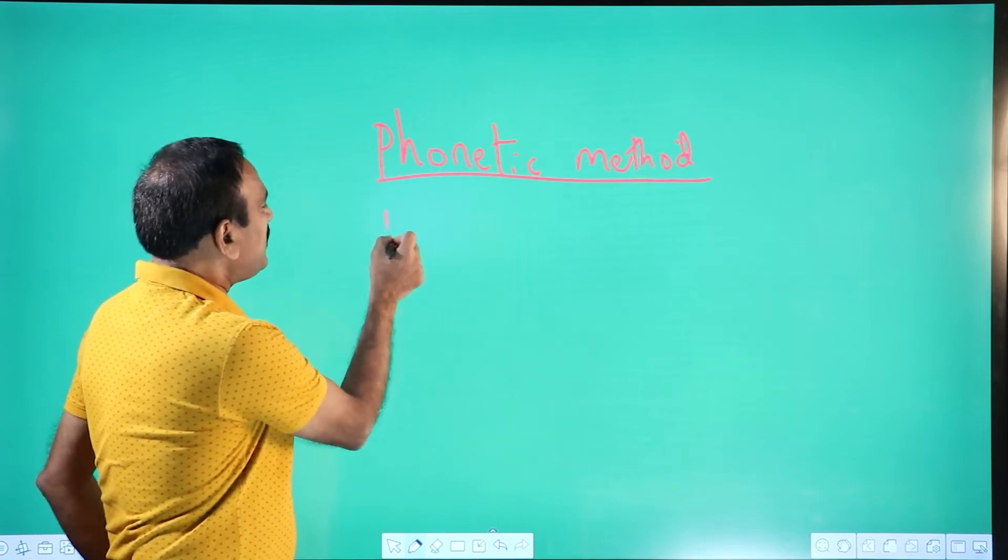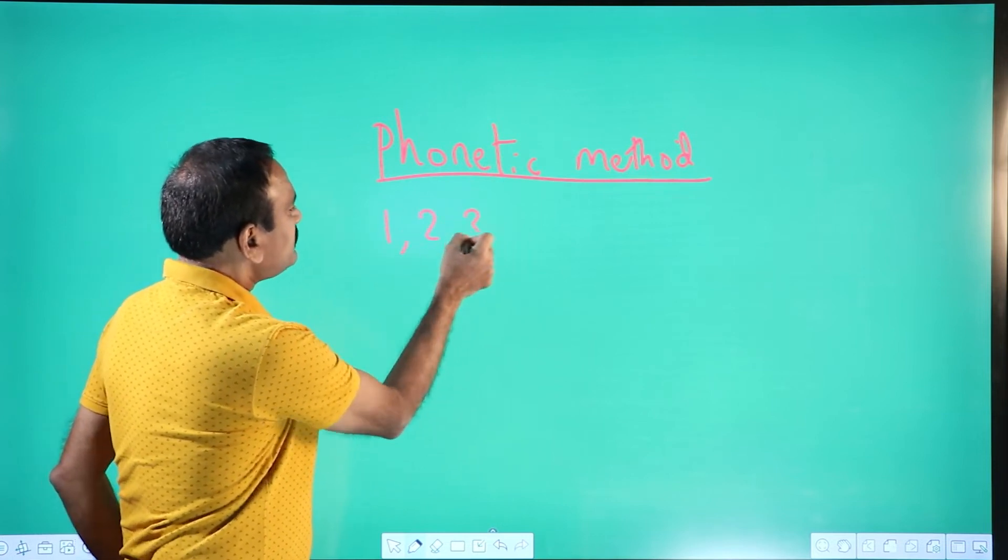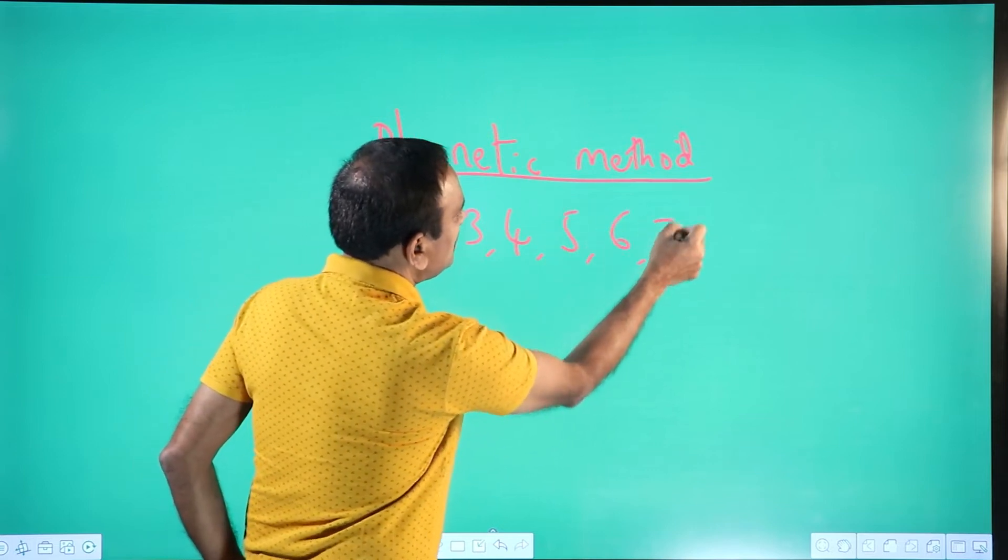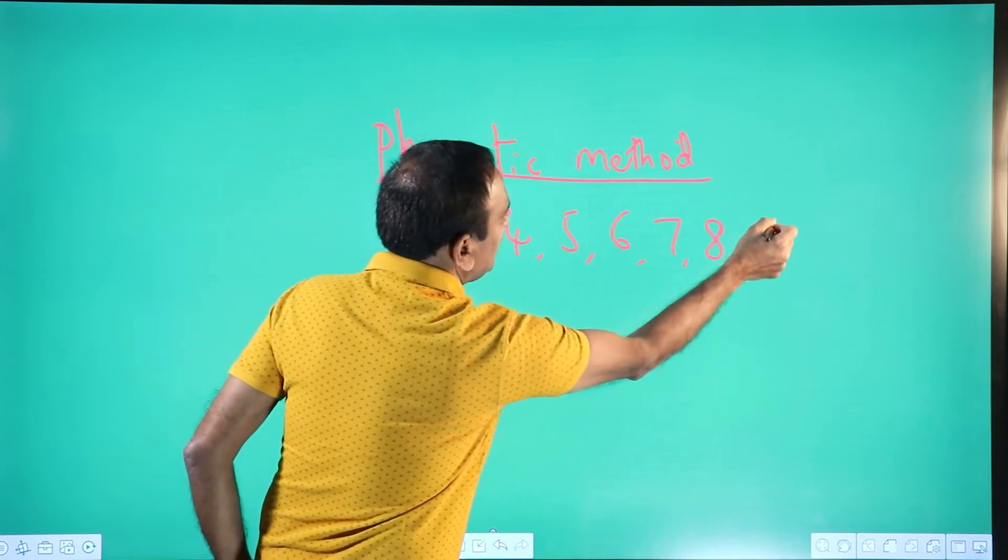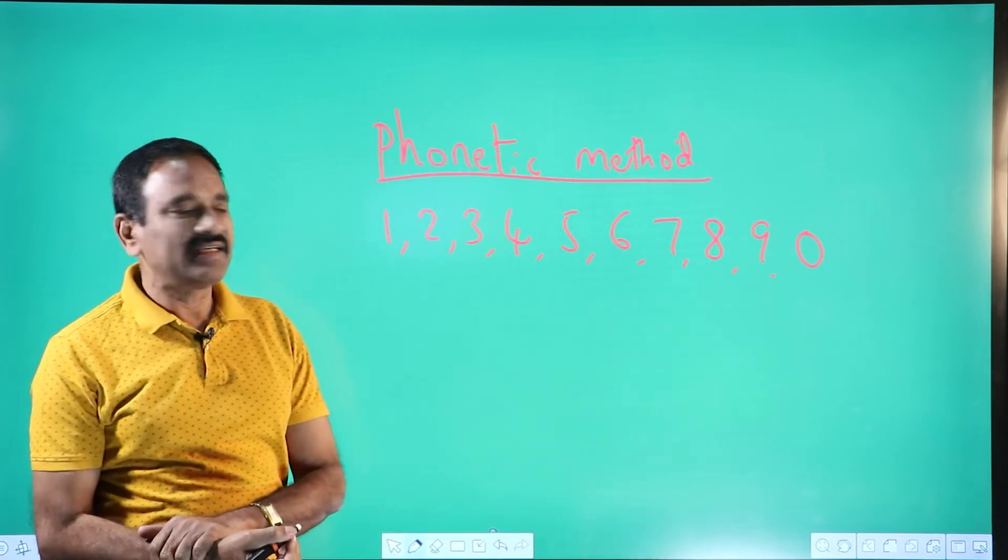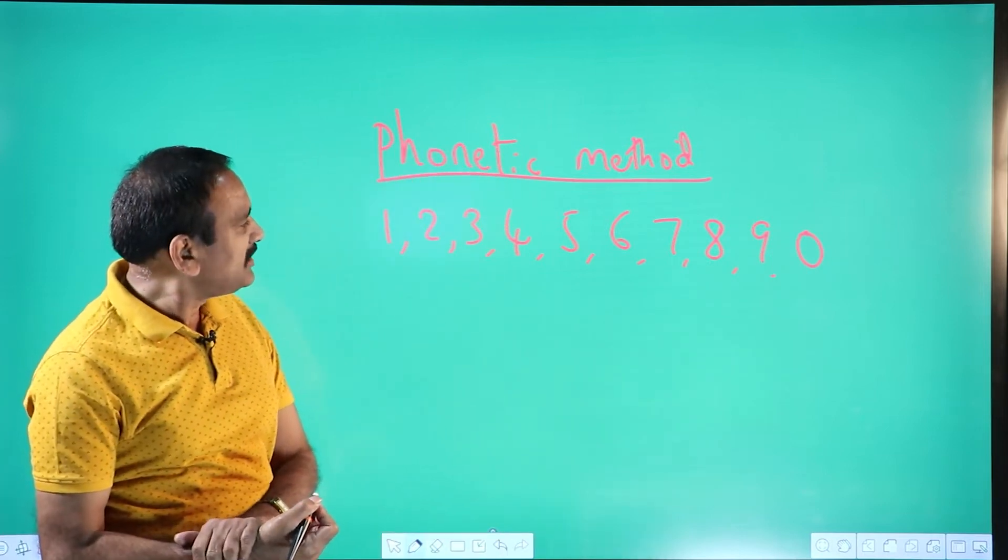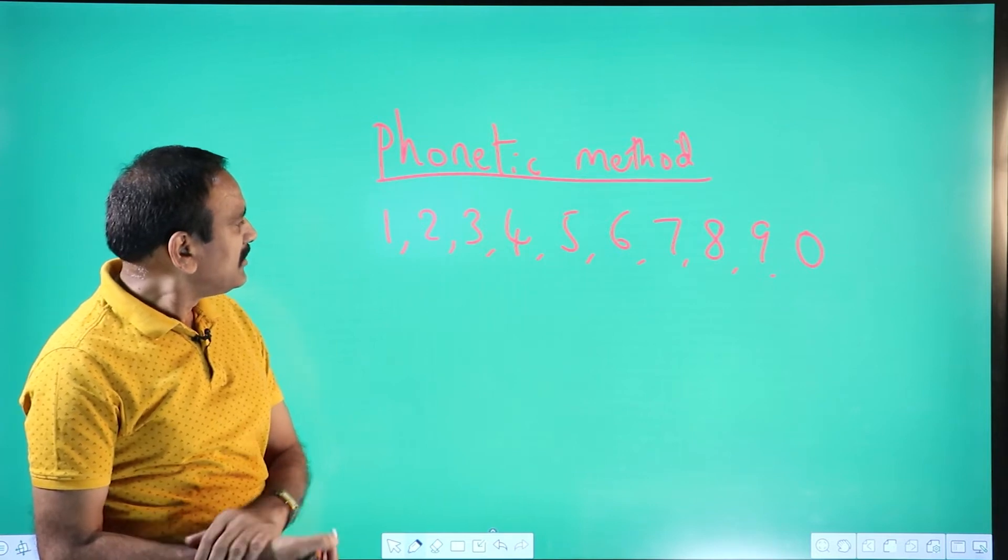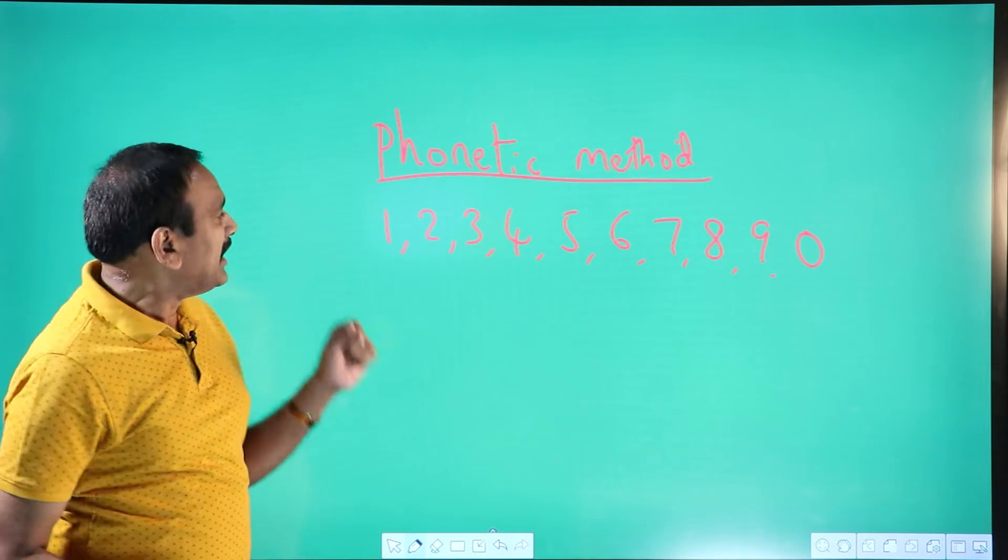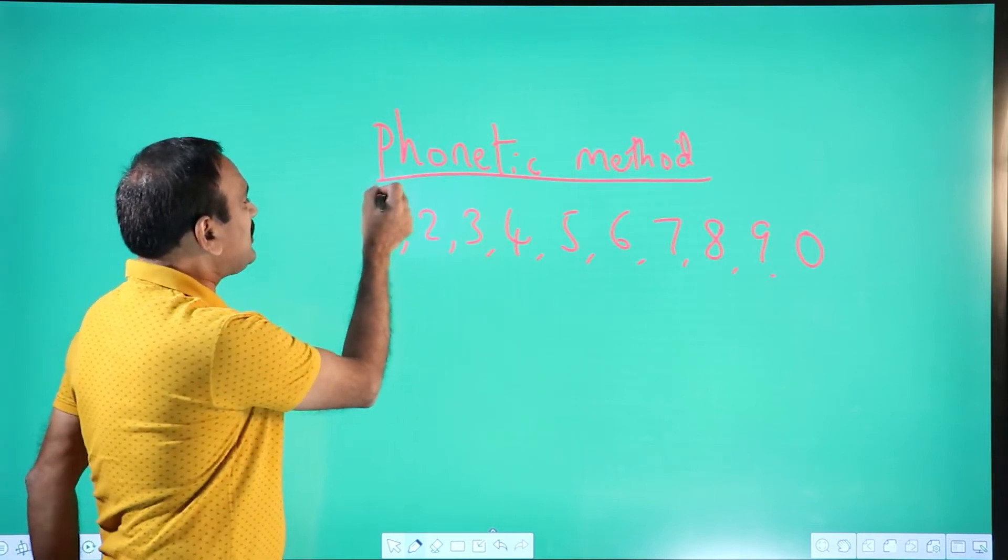But basically, I will give you one clue. Any number you take, you get 1, 2, 3, 4, 5, 6, 7, 8, 9 and then 0. You only get these 10 digits. And if you look at these numbers, any big number will be considered only 10 digits. And every digit has got one equivalent sound.